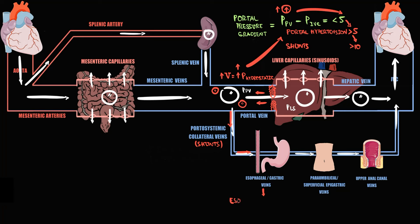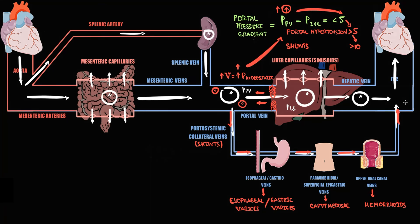Distension of esophageal veins and gastric veins causes formation of esophageal varices and gastric varices. Distension of paraumbilical and superficial epigastric veins causes formation of caput medusae on the anterior abdominal wall. And distension of upper anal canal veins causes formation of hemorrhoids. The problem with varices is that the more distended they become, the higher the chance of their rupture.